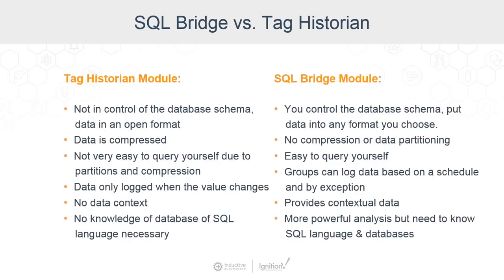Putting them side by side and doing some comparisons — pros and cons. On the Tag Historian, you're not in control of the database schema. The data is in an open format in the SQL database, but we control the schema and we do data partitioning, separating data into separate tables in the database to maximize performance. Ignition takes care of that so customers don't have to worry about knowing much about databases. We log data as it changes, use algorithms for some compression so we don't log data unless we actually need to, and we do interpolation when bringing that data back. There's really no knowledge of SQL language necessary.